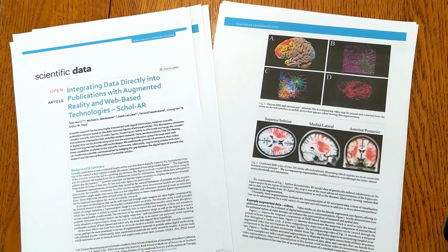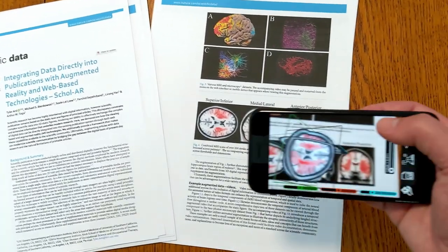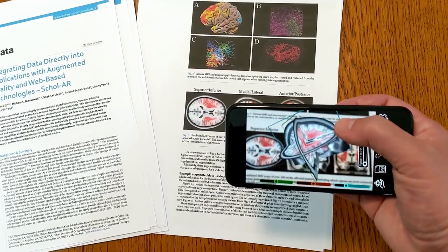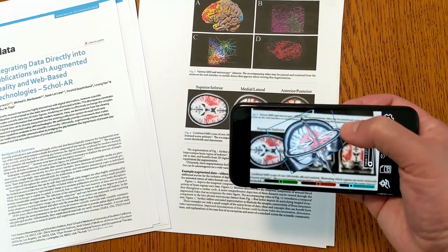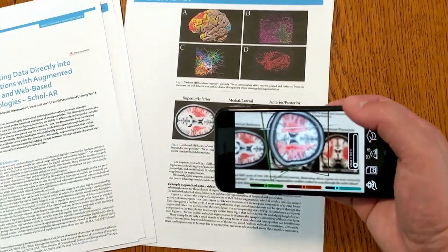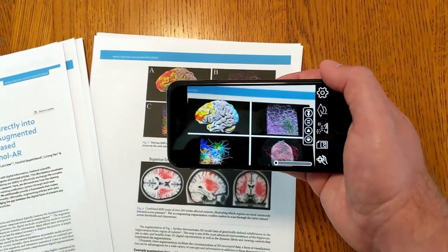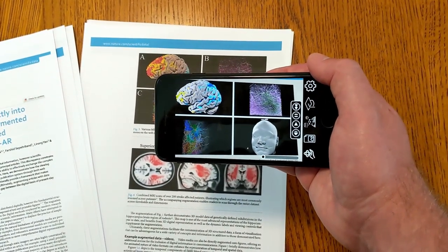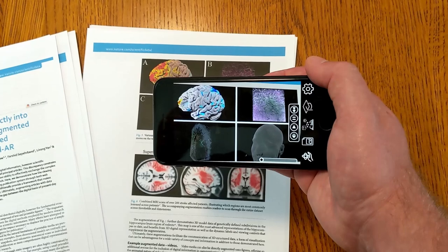This is a typical scientific paper, and this is Scholar. Scholar is a platform designed to modernize scientific publication by augmenting digital media and interactive data directly onto scientific articles, posters, and other formats.